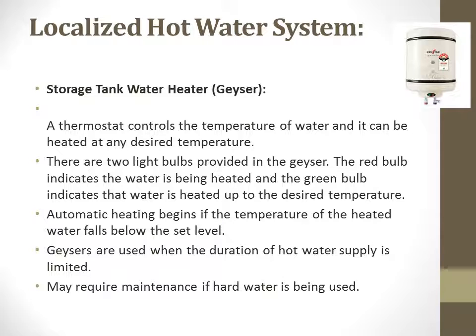Next is the localized hot water system — the storage type, which you commonly know as a geyser. As you can see in the photo, it has a thermostat, which is a temperature controller inside — indicated by green or red light. Simply, one channel is the inlet where cold water comes in, and another channel is the outlet. As simple as that.